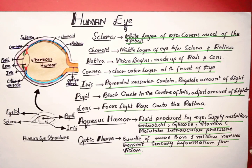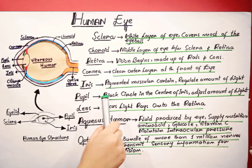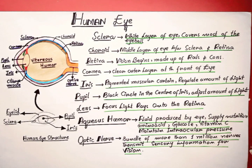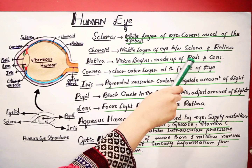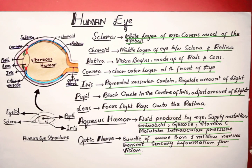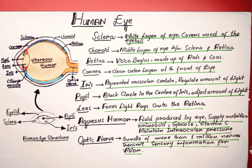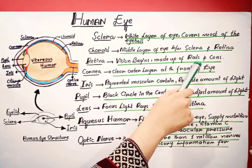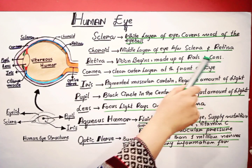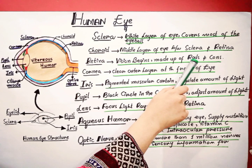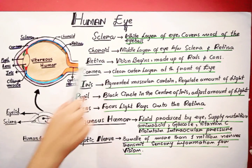The retina lines the inner surface of the back of the eyeball and is composed of specialized cells called photoreceptors. The photoreceptors consist of rods and cones. Rods are responsible for providing black and white vision, while the cones are responsible for color vision. So retina is a very important part of the eye.